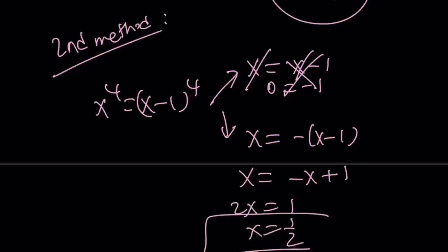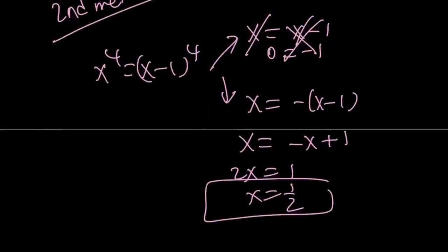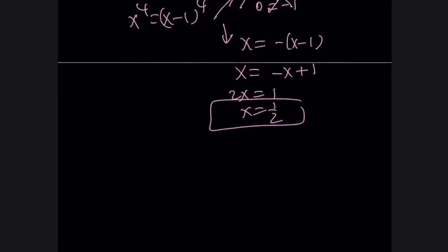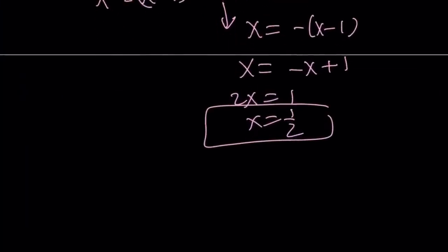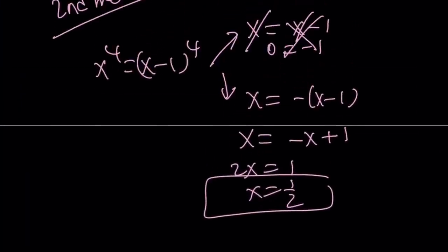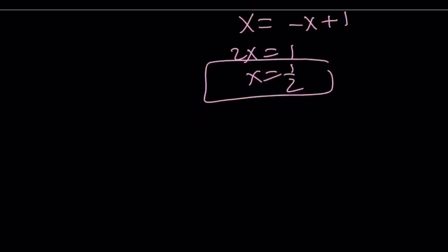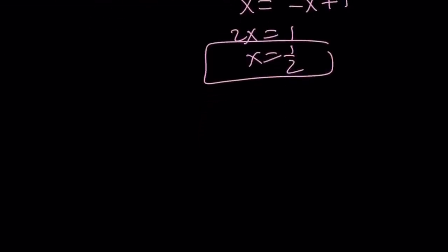But wait a minute. Where are the other solutions that are complex? Well, you don't get them solving the equation this way because this is a very real solution, and it doesn't give you any complex solutions. But don't worry, once you know that x equals 1 half is a solution, you can go ahead and turn it into a cubic, but don't use the first method, and divide by x minus 1 half. So x minus 1 half is going to be one of the factors, and it's easy to find the other factor by long division or whatever division you want to do.